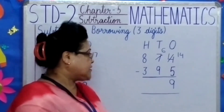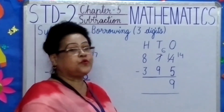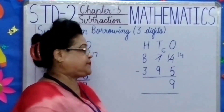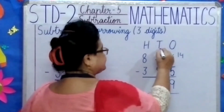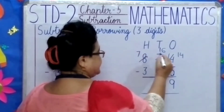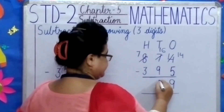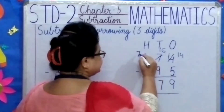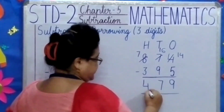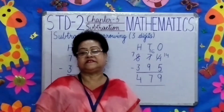Why? Because 6 is smaller and 9 is bigger. So what do we do, children? We borrow one from the hundreds place. Then this becomes 16 and this becomes 7. Now, 16 minus 9, what do we get? 7. 7 minus 3, what do we get? 4. So what is your answer, children? 479.